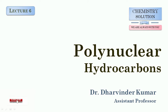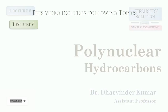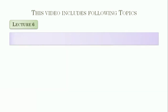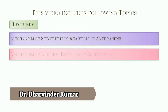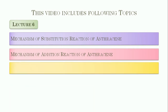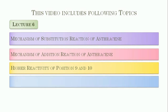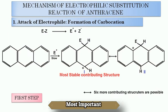Students, this is lecture number 6 in Polynuclear Hydrocarbon. In this chapter, we will discuss: the Mechanism of Electrophilic Substitution Reaction of Anthracene, the Mechanism of Electrophilic Addition Reaction of Anthracene, and the high reactivity of positions 9 and 10 in the case of Anthracene. So let us first start with the Mechanism of Electrophilic Substitution Reaction of Anthracene.